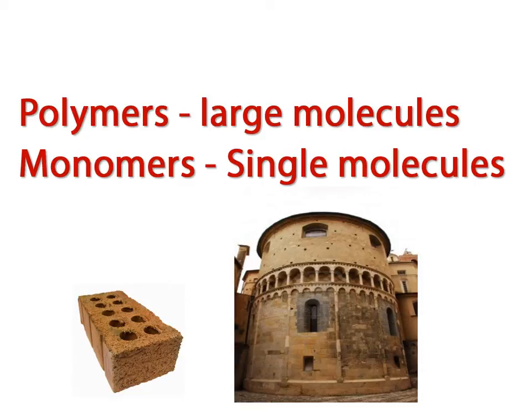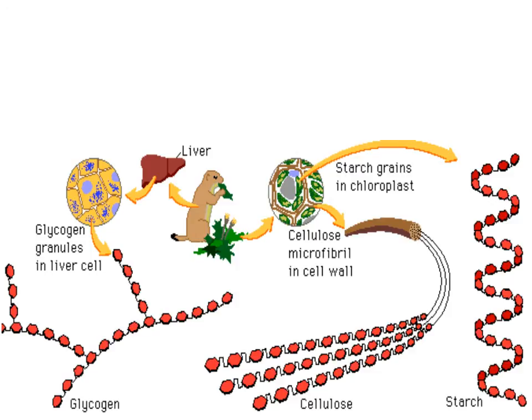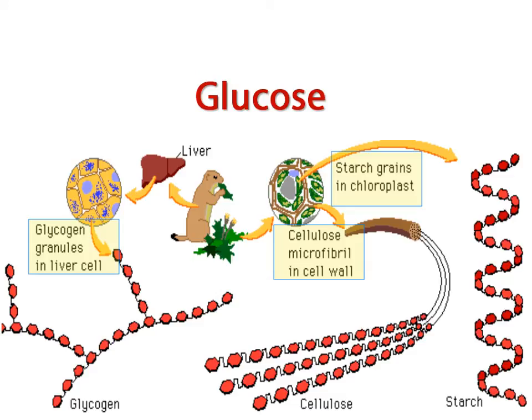You will have to answer questions that will ask you to identify the monomers or polymers for each of the major food groups we are studying here. In the case of carbohydrates, if I asked you what the building blocks of starch, cellulose, or glycogen are, you could say glucose. Or, depending on the question, you might also answer monosaccharide.